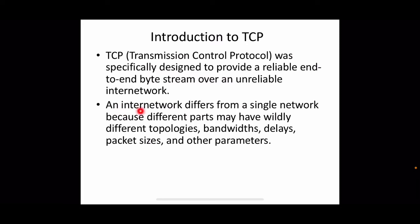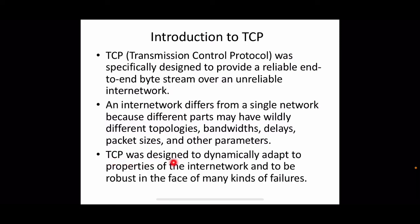An internetwork differs from a single network because different parts may have widely different topologies, bandwidth, delays, packet sizes, and other parameters. The internet is a collection of heterogeneous networks connected together. TCP was designed to dynamically adapt to the properties of the internet network and to be robust in the face of many kinds of failures.